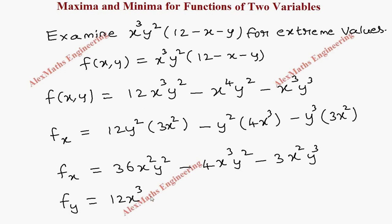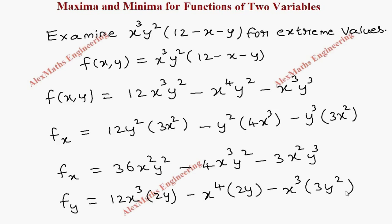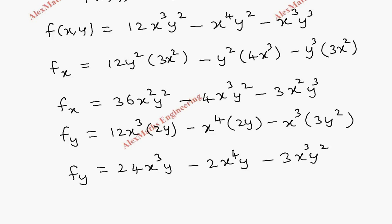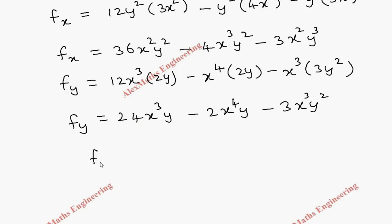Now let's find fy. Here 12x³ is constant, differentiation of y² is 2y. We are doing partial differentiation with respect to y, so x is constant. For -x⁴y², differentiation gives 2y; for -x³y³, differentiation gives 3y². Rearranging: fy = 24x³y - 2x⁴y - 3x³y².